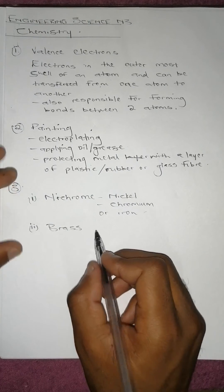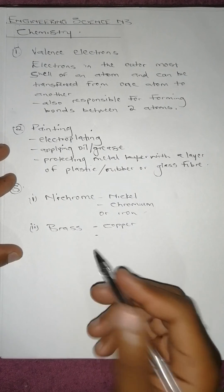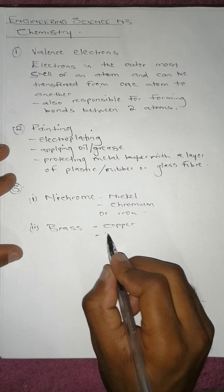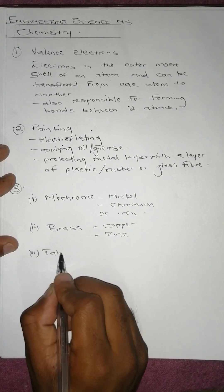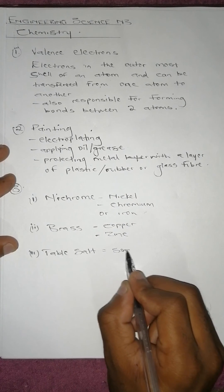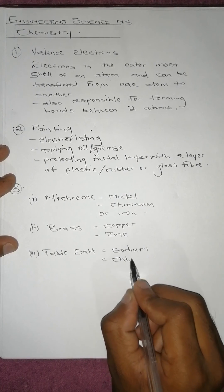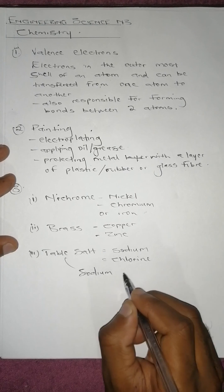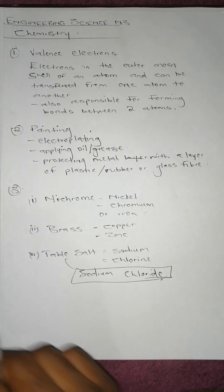Then we've got brass. Brass is made of copper — if you check its color, it's golden in color, similar to copper — and also zinc. Number three, we've got table salt. Table salt is made of sodium and chlorine, and it's called sodium chloride.